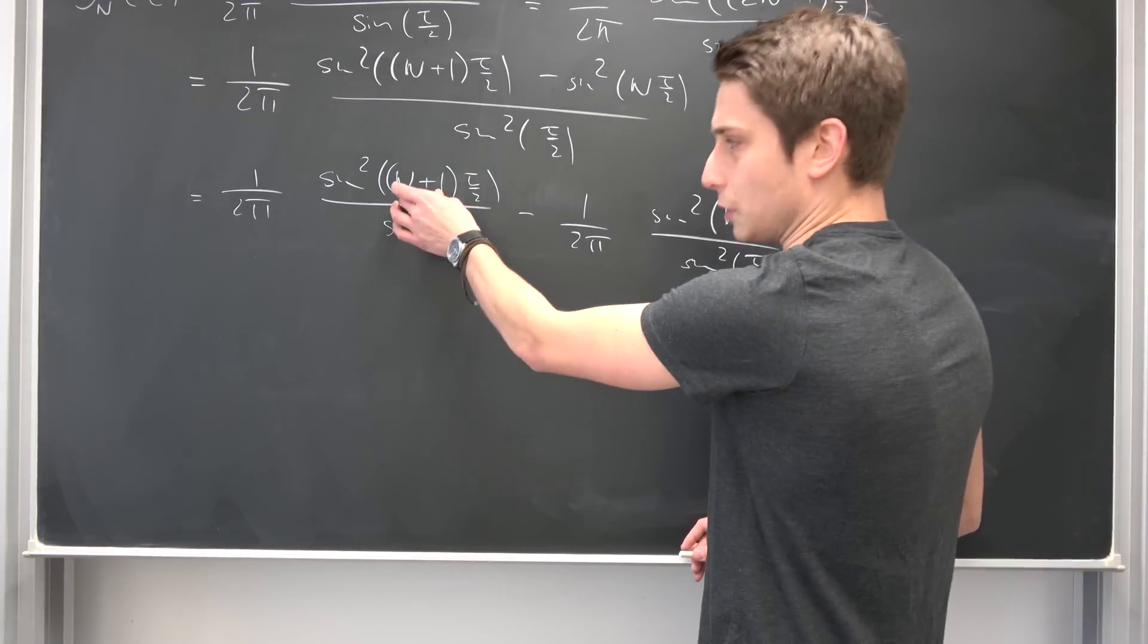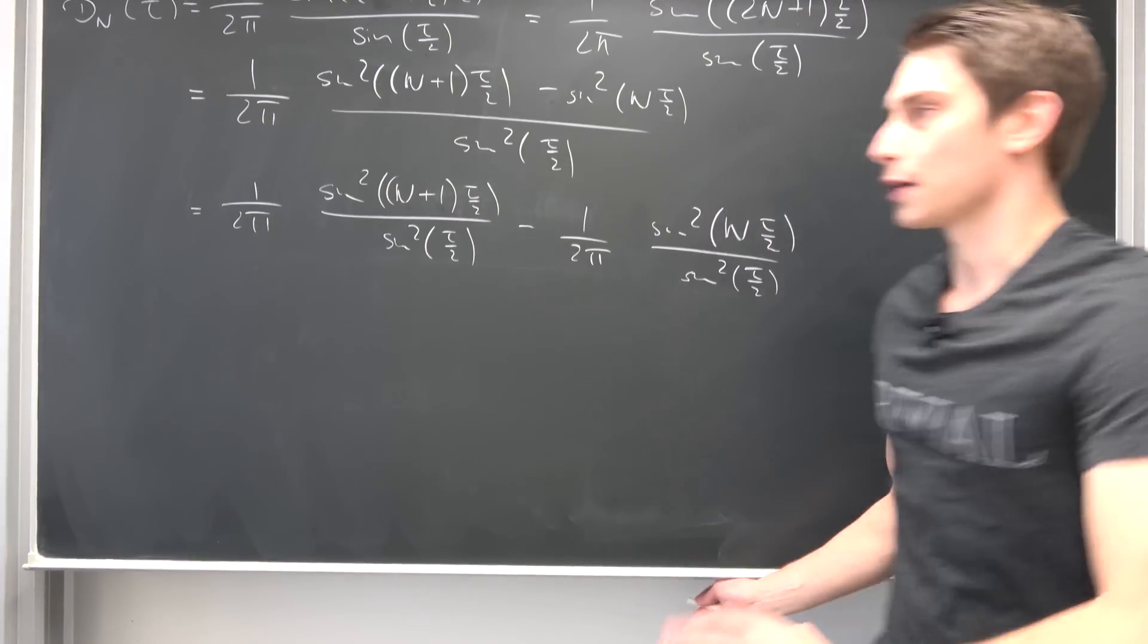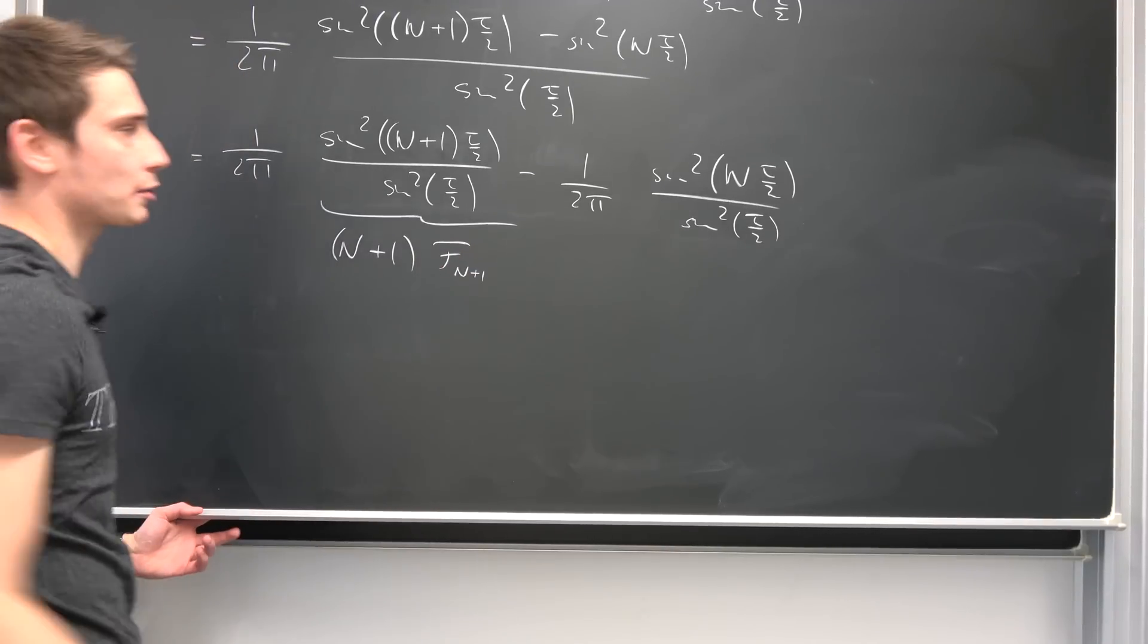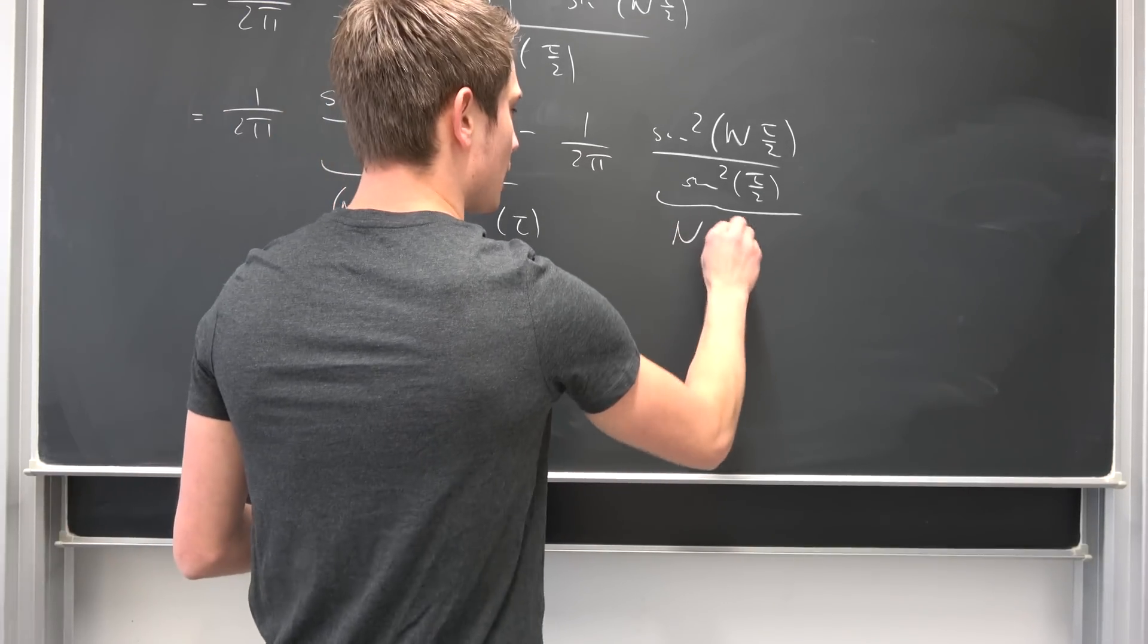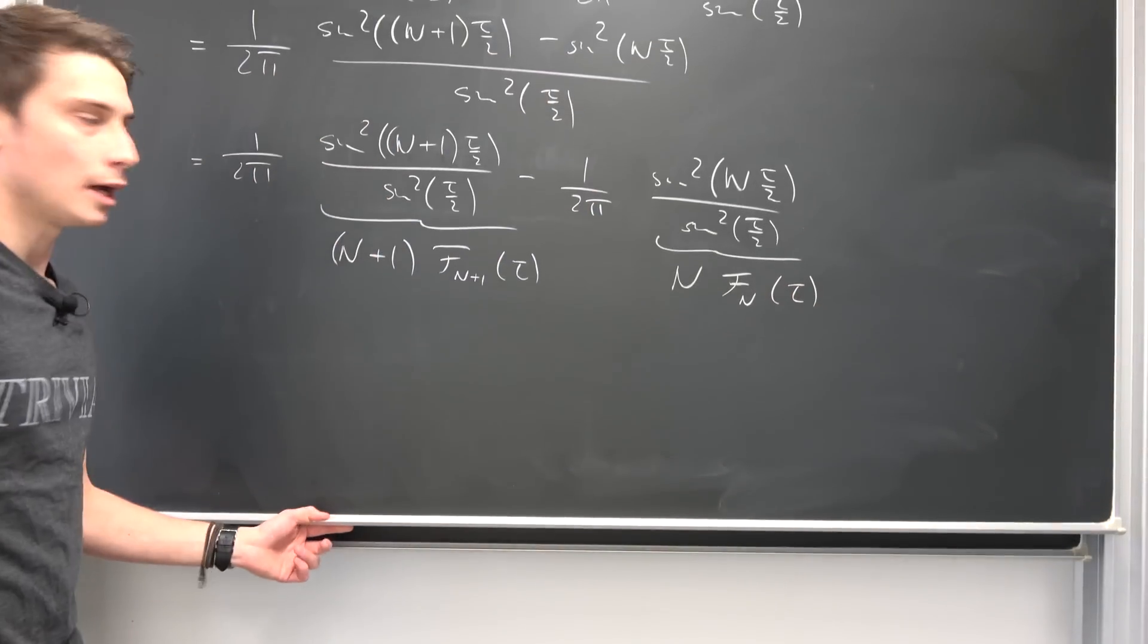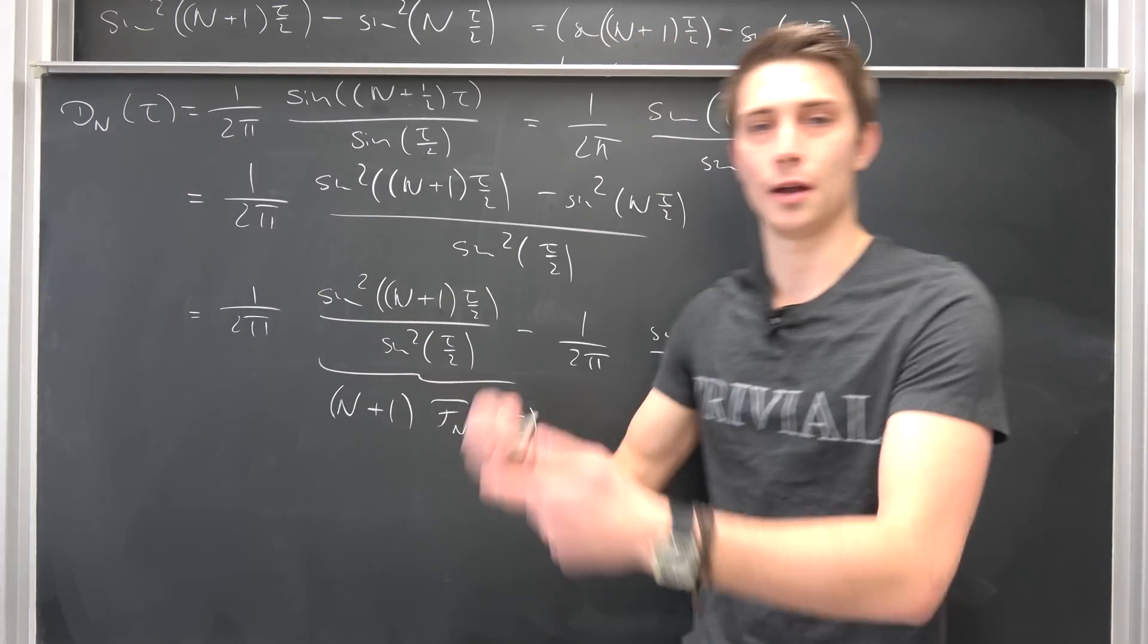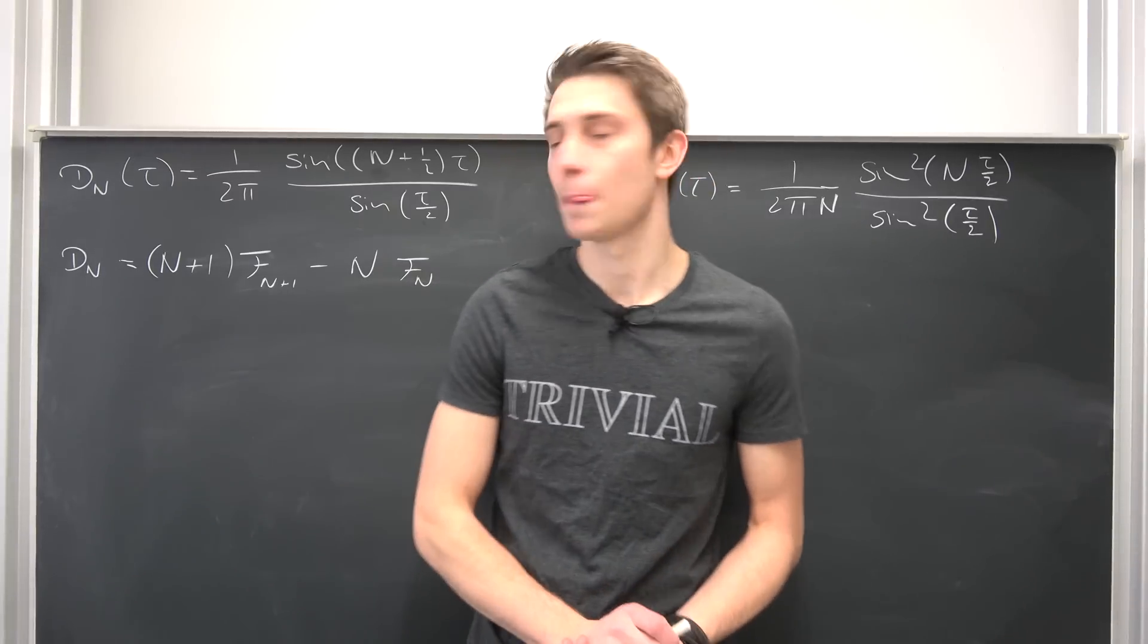And here is where the Fejer kernel comes in, finally. If we take a look at this little argument right here, this little shift in the sine wave, this is n+1 and we are going to define it as follows. This thing right here is nothing but (n+1) times the Fejer kernel of the (n+1)th degree with respect to tau. And this thing right here is nothing but n times the Fejer kernel of the nth degree of tau. And now we are going to derive a final expression for our Fejer kernel right here recursively making use of our Dirichlet kernel which we started off with.